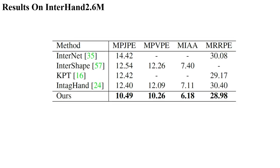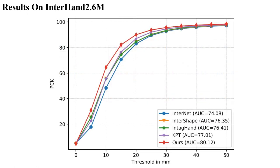Our method has significant advantages in average joint error and average vertex error. At the same time, our method can achieve better image-mesh alignment. Our method shows a better understanding of the spatial relationship of interacting hands, and outperforms the state-of-the-art method in PCK at all thresholds.